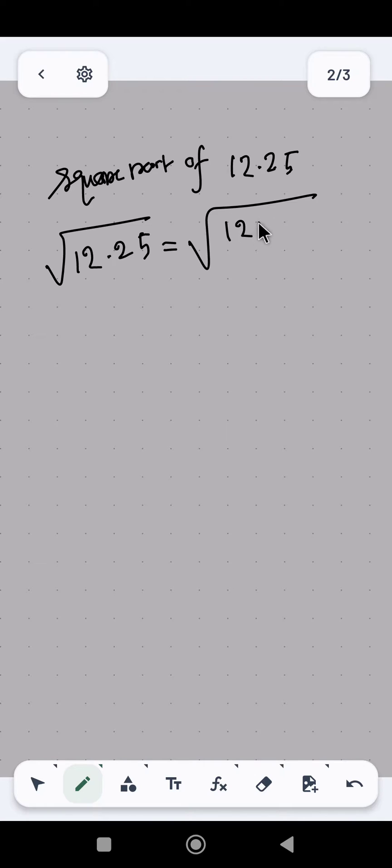So we can write this as 1225 divided by 100. Okay, now we factorize this 1225.